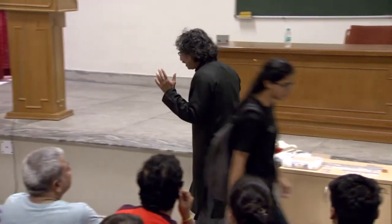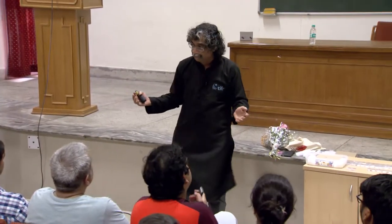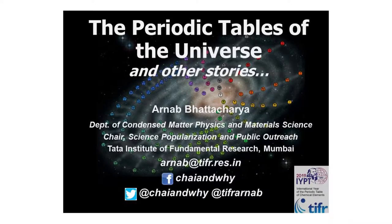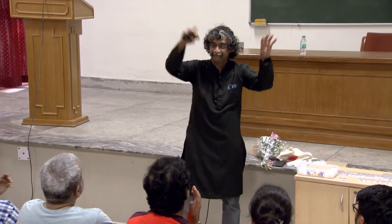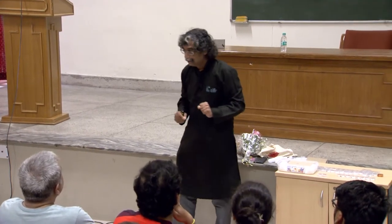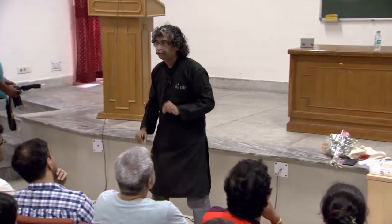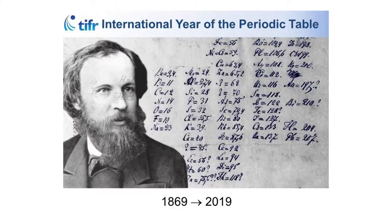I assume that you know there are chemical elements all around us, and we have tried to arrange them in a particular form called a periodic table. Hopefully at some point in your life you may have seen a periodic table hanging in a chemistry lab. The two things I want you to take home today are that there is not one periodic table but periodic tables — I will show you many. The other thing is this periodic table of elements is not just the elements found on Earth, but it is the periodic table of the universe.